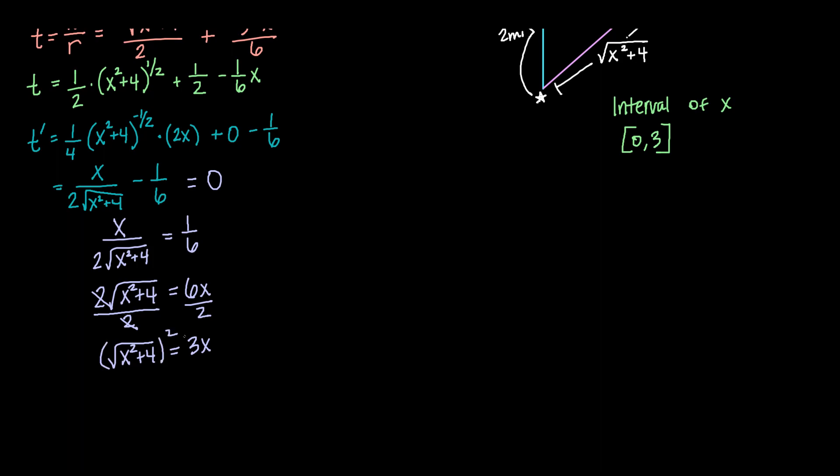Squaring both sides here to get rid of that square root, I get x squared plus four equals nine x squared. Subtracting over my x squared, I get four equals eight x squared. If I divide over that eight, that is one-half gives me x squared. And then taking the square root of that, that's the square root of one over the square root of two, really thinking plus or minus there, equals x.